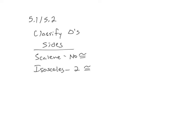Alright, so reviewing today 5.1 and 5.2. 5.1 has the most info in it. So classified triangles - we had sides: scalene, no sides are congruent; isosceles, two sides are congruent; and equilateral, all congruent.